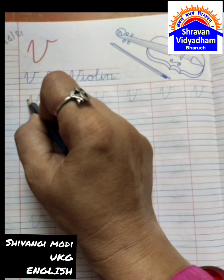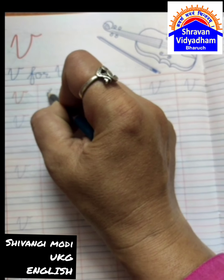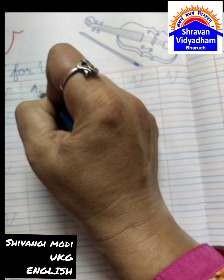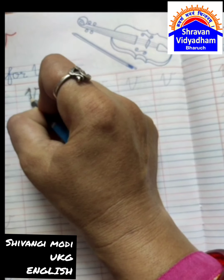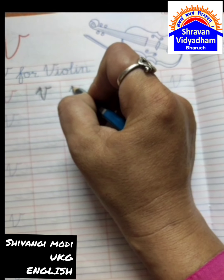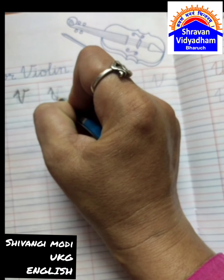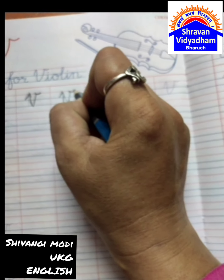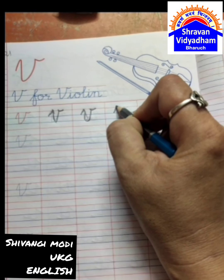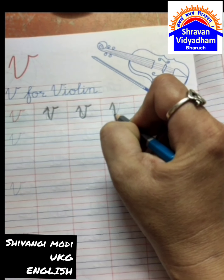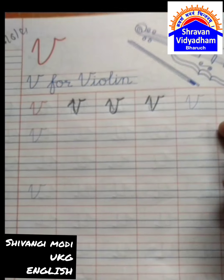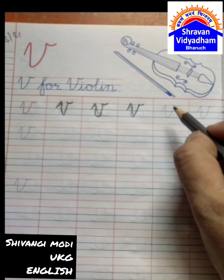Blue line to red line, slanting line, again slanting line, slanting line, turn. Again red line to blue line, slanting line, then slanting line, then turn. Blue line to red line, slanting line, red line to blue line, again slanting line, then turn. V for Violin, V for Was.